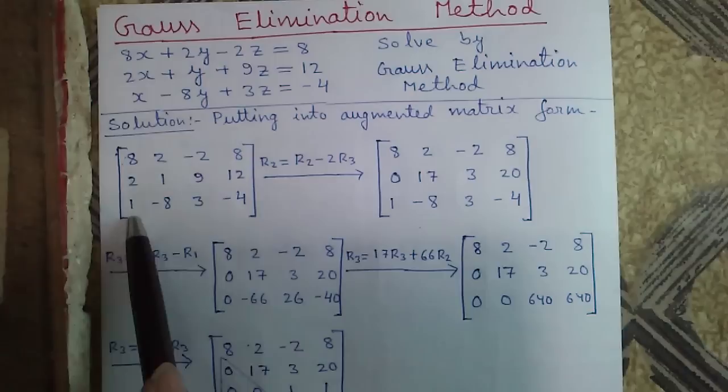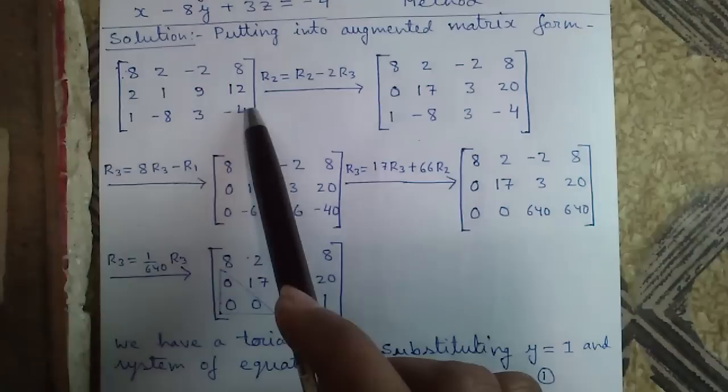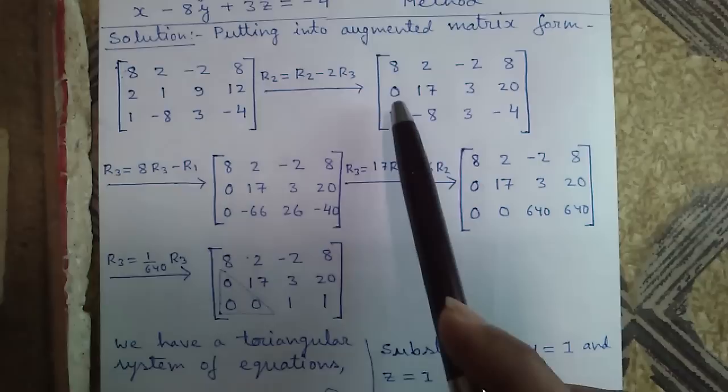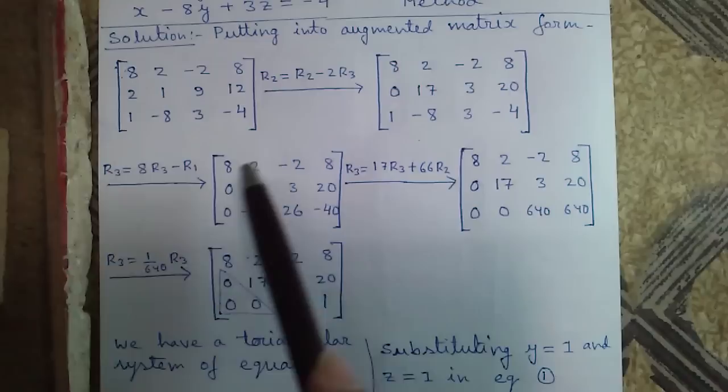The objective of Gauss elimination method is to form a lower triangle of zeros. To bring a 0 here, we can multiply R3 by 2 and subtract that from R2. So R2 equals R2 minus 2R3 — we will get a 0 here. To bring a 0 here, we can multiply R3 by 8 and subtract R1 from that. So R3 equals 8R3 minus R1 — we will get a 0.